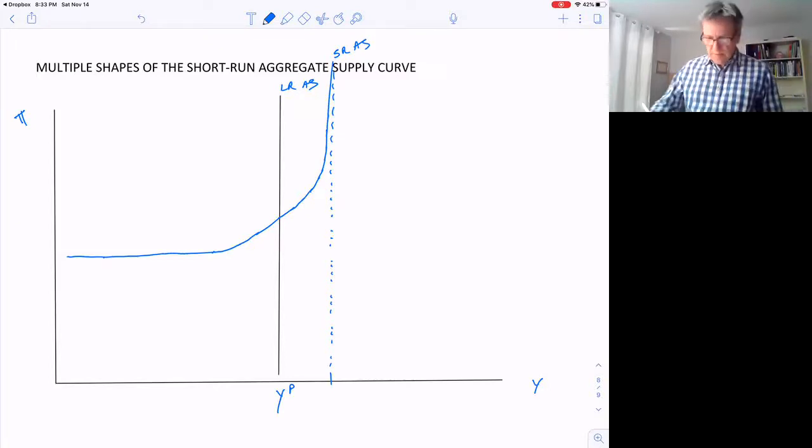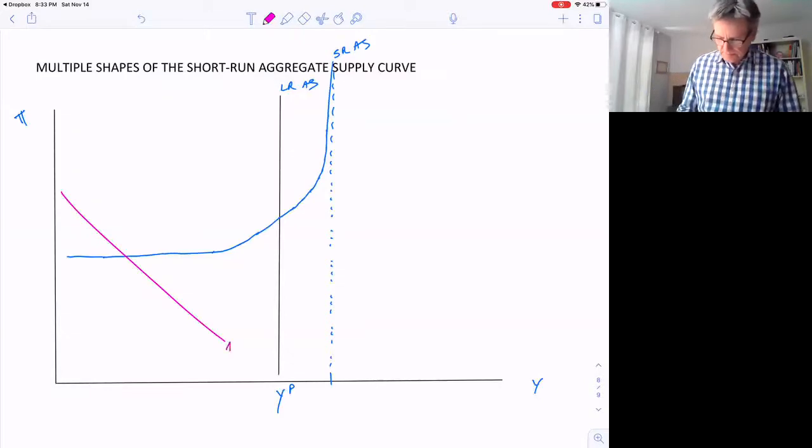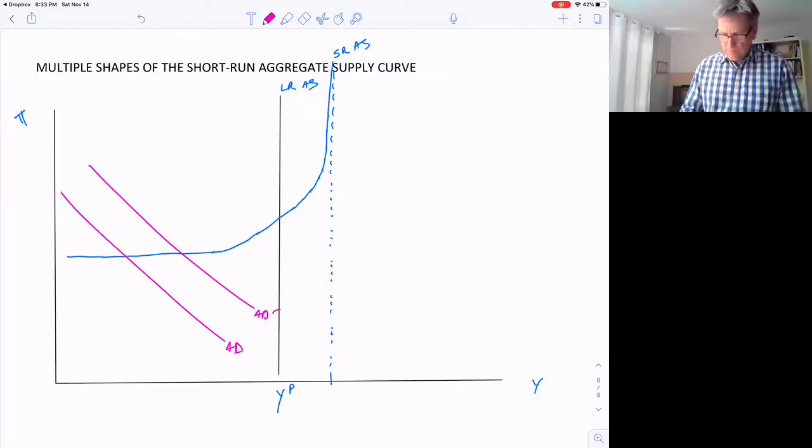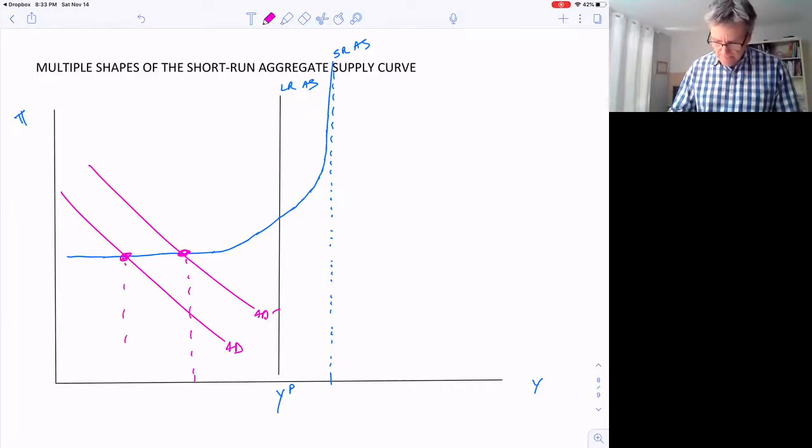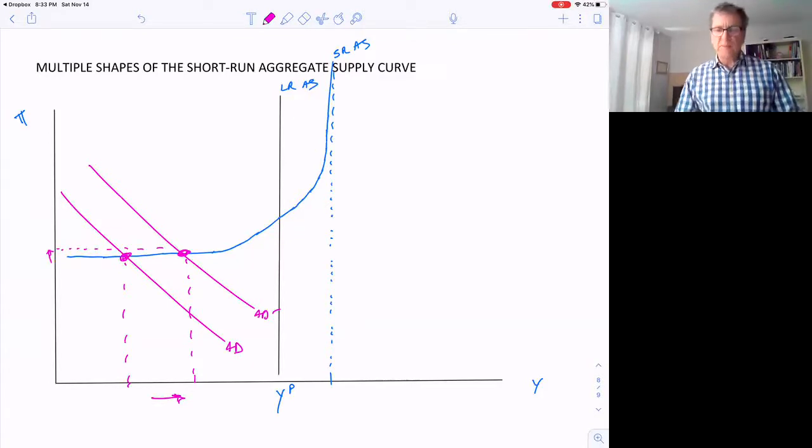Now, this is important because if aggregate demand is down here, we're in a recession and we have some sort of fiscal policy to increase aggregate demand. We might be able to increase output substantially here without inflation going up very much. So we can increase output, but just a little tiny bit of an increase in inflation, if it's pretty flat.